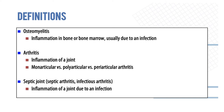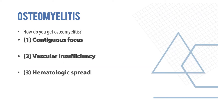Arthritis is an inflammation of a joint, which can be of a single joint, multiple joints, or around the joint. Septic joint or septic arthritis is when there is an infection in the joint. So infection in the bone is osteomyelitis; infection in the joint is septic arthritis.